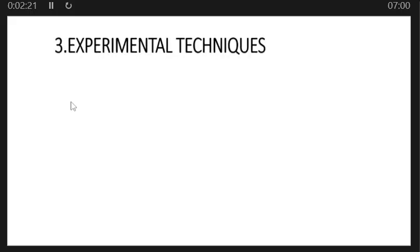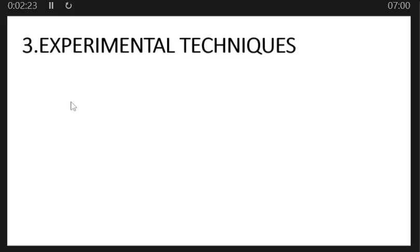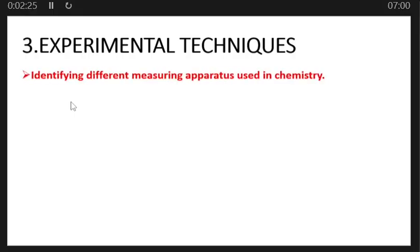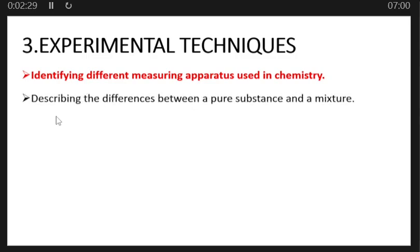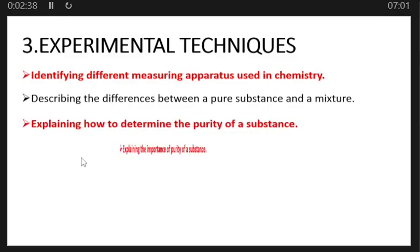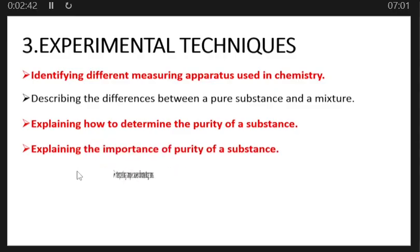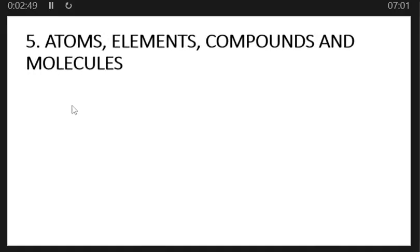Topic number three is experimental techniques. This includes identifying different measuring apparatus used in chemistry, describing the differences between a pure substance and a mixture, explaining how to determine the purity of a substance, explaining the importance of purity of a substance, and interpreting simple paper chromatograms.